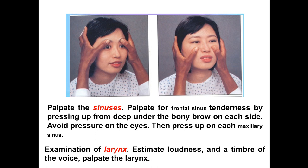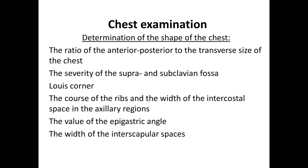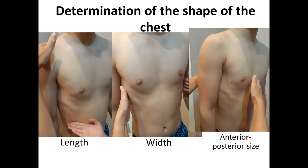Continue with examination of the larynx: estimate the loudness and timbre of the voice and palpate the larynx. Then proceed to inspection of the chest — assess chest shape, symmetry, participation of the chest in the act of breathing, breathing parameters, and chest excursion. To detect the shape of the chest, assess: the ratio of anteroposterior to transverse size, severity of supra- and subclavicular fossae, the Louis angle, course and slope of ribs, and width of the intercostal space in the axillary region.